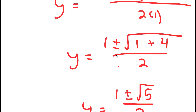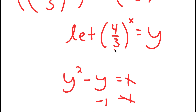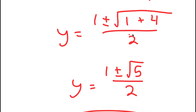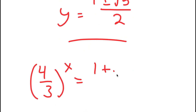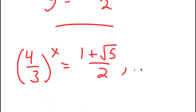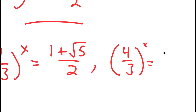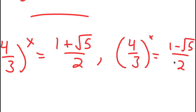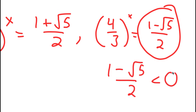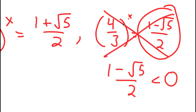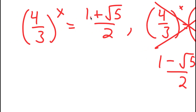These are my two solutions for y. However, we aren't done yet because we let (4/3)^x equal y. So (4/3)^x equals (1 + √5)/2, or (4/3)^x equals (1 − √5)/2. Now (1 − √5)/2 is less than 0, and you can't raise a positive number to a power and get a negative result, so that equation has no solution. My only valid equation is (4/3)^x equals (1 + √5)/2.